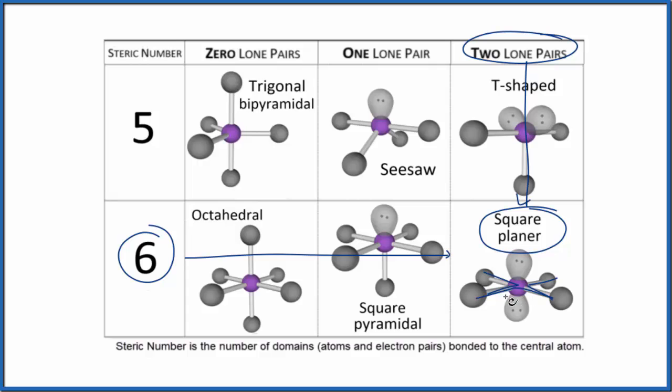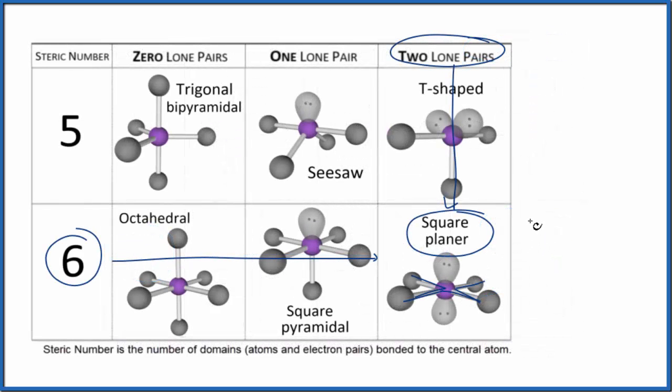There is one more way we could do this. It's called the AXE notation. So A, that's the central atom. That is the iodine. X, that's the number of atoms bonded to the central atom. We have one, two, three, four.